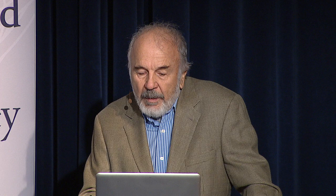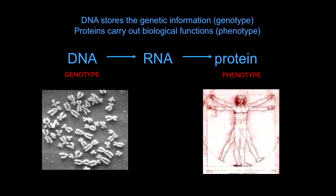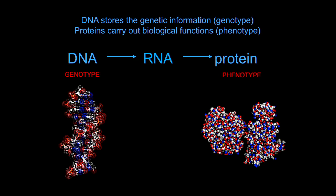Ribosomes translate the RNA language into protein language. On the one hand, we have our genotype, the chromosomes. On the other hand, the phenotype — who we are. The genotype is of course determined by DNA, the phenotype by our proteins, and the intermediary is RNA.